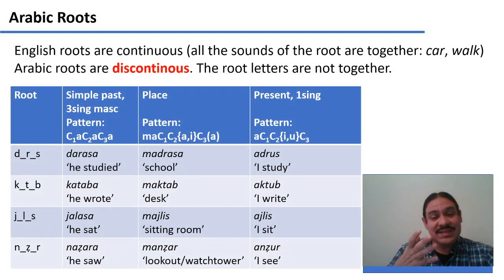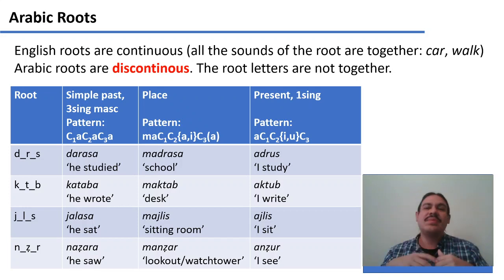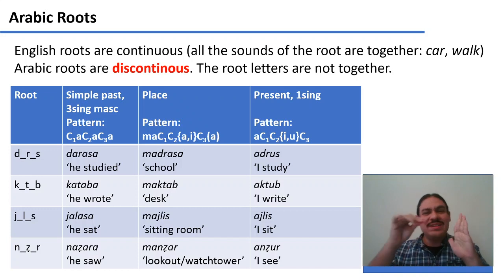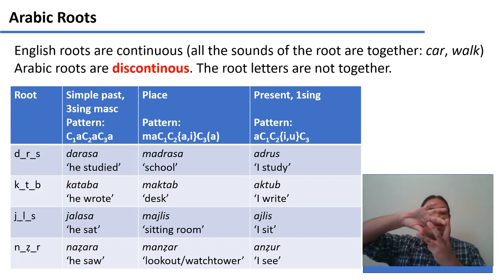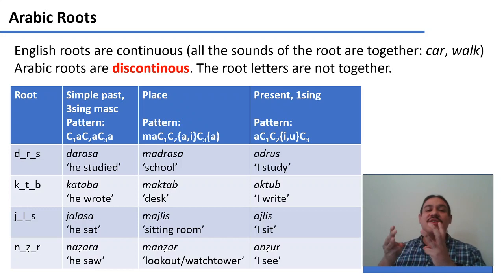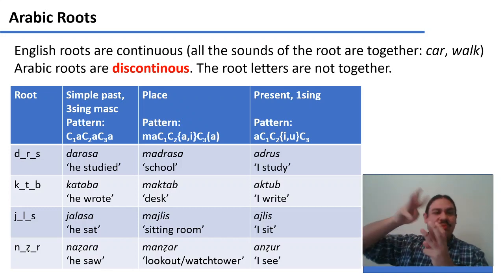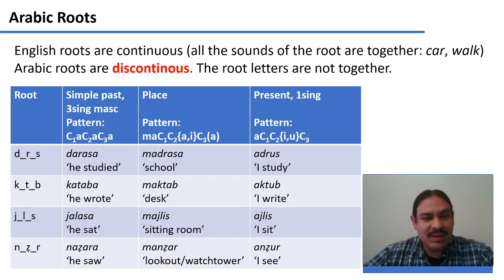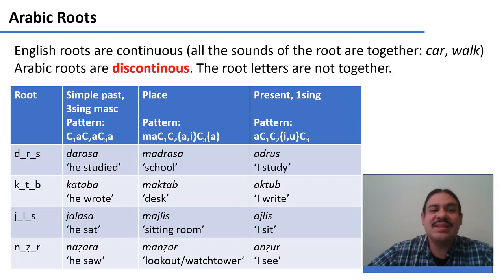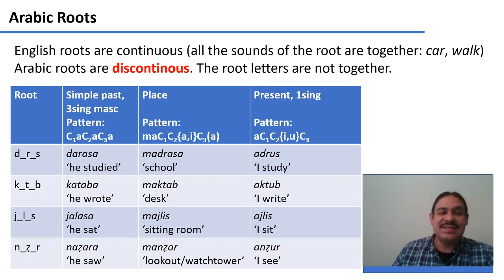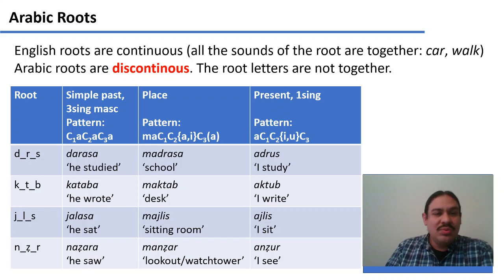All the roots we've looked at so far are continuous — sounds like 'walk' are bundled together. But there are languages where roots are discontinuous: the root's sounds are separated, and conjugation is an interleaving of other sounds in the middle. In Arabic, for example, the consonants D-R-S form the root meaning 'to study,' and conjugation patterns interleave vowels between those consonants.